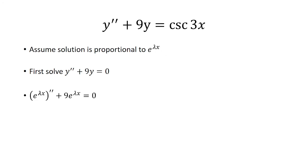Now we can substitute y equals e^(λx). Taking the second derivative of that, we get λ² times e^(λx), and then plus 9e^(λx) equals 0.